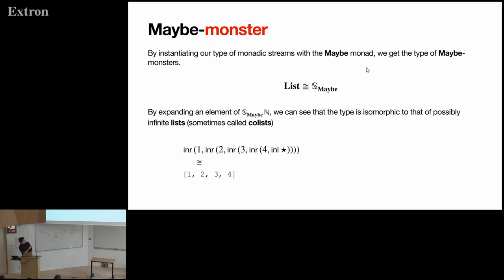So first example are maybe monsters. By instantiating our type of monadic streams with the maybe monad, we get the type of maybe monsters. And by expanding a particular element, so maybe monsters of natural numbers, we can see that they're isomorphic to that of lists. And because monadic streams are a co-inductive data type, you get co-lists rather than lists.